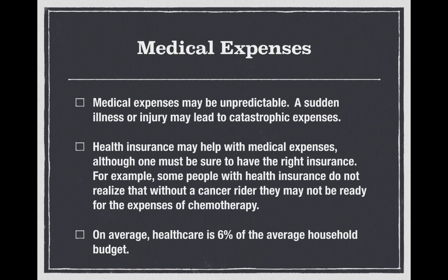Medical expenses may be unpredictable. A sudden illness or injury may lead to catastrophic expenses. Health insurance may help with medical expenses, although one must be sure to have the right insurance. For example, some people with health insurance do not realize that without a cancer rider, they may not be ready for the expenses of chemotherapy. Your regular health insurance may or may not cover chemo or radiation therapy. You have to look at your coverage and make sure it covers the things you're concerned might happen to you. On average, healthcare is 6% of the average household budget.